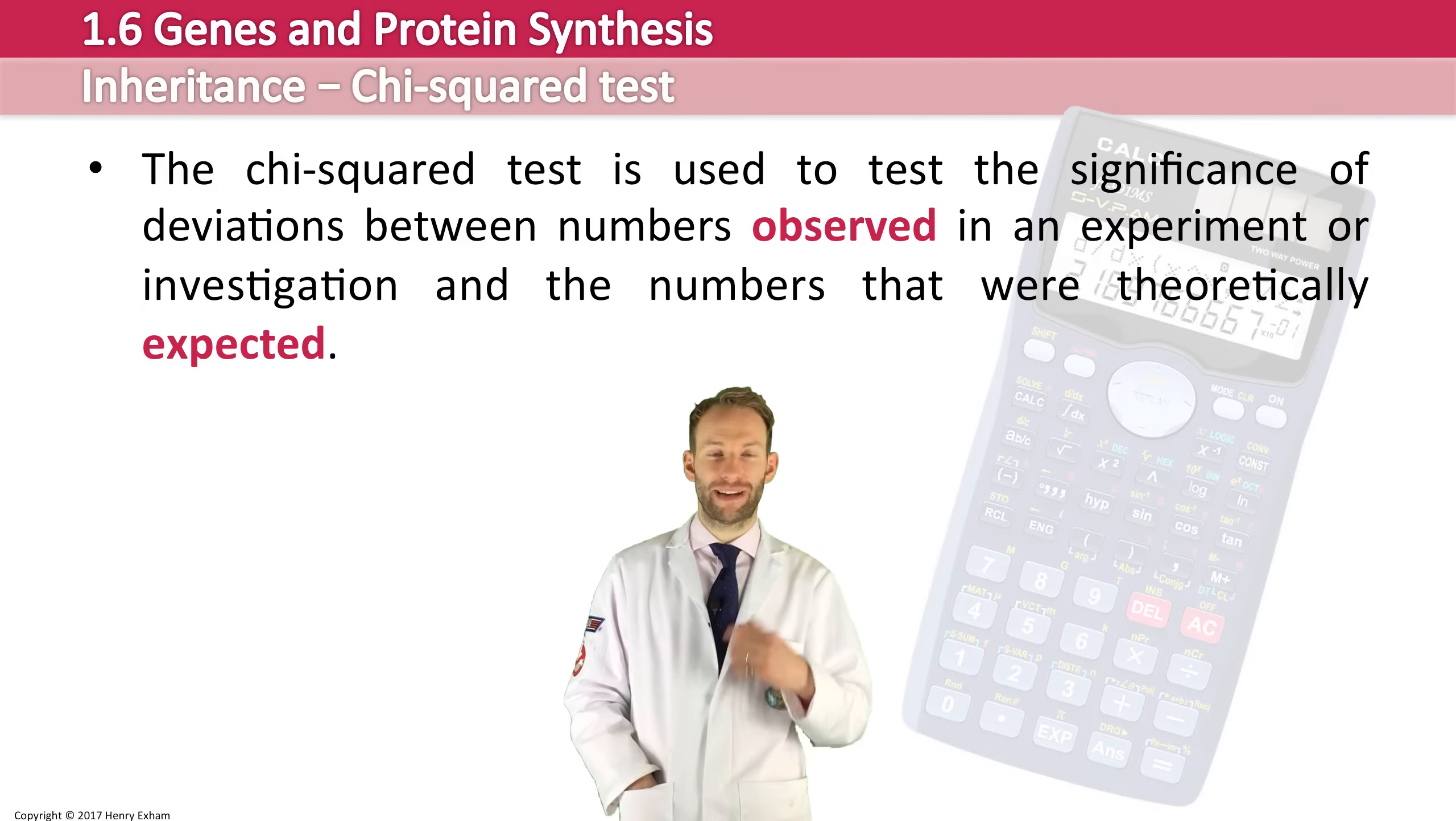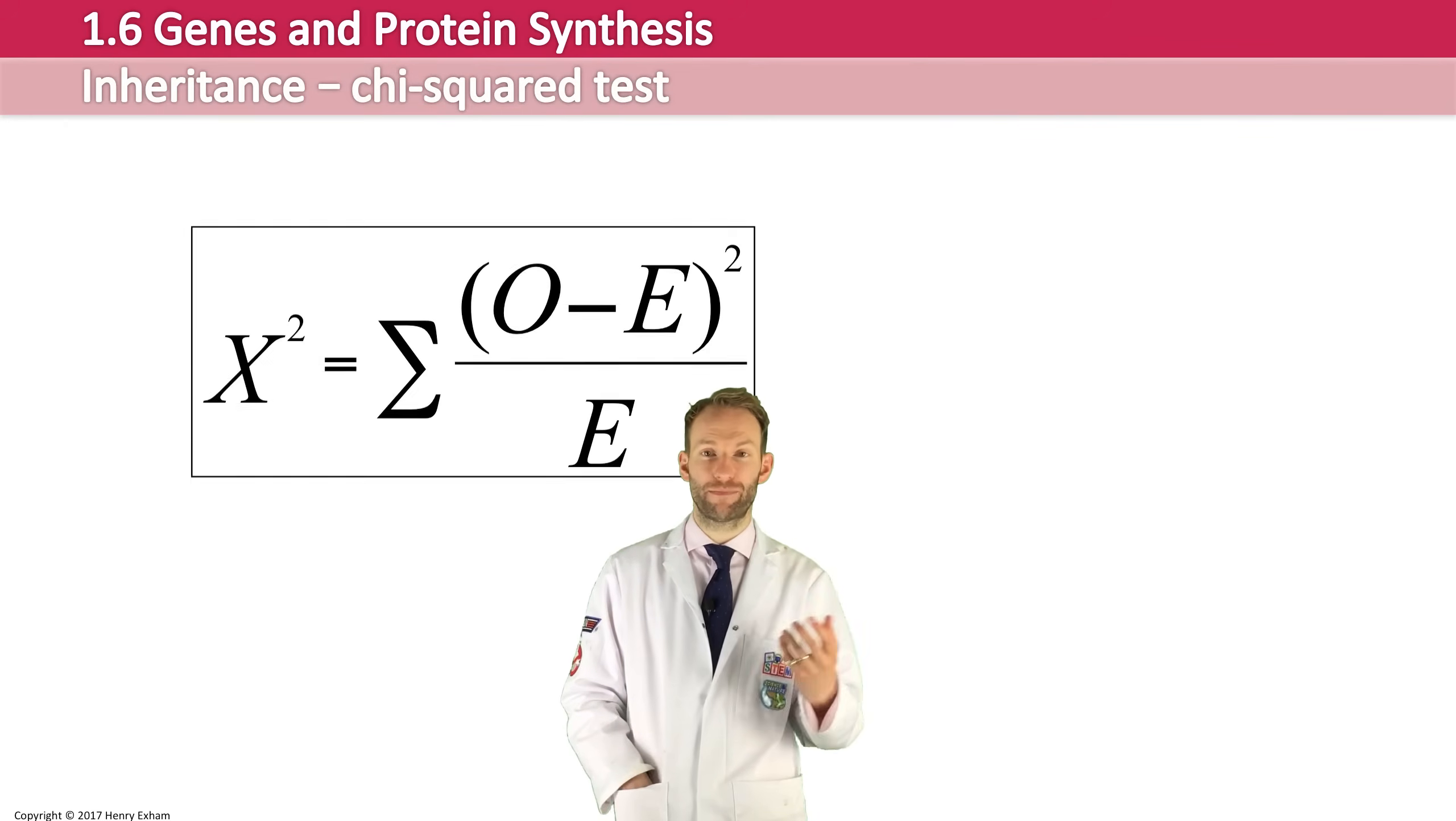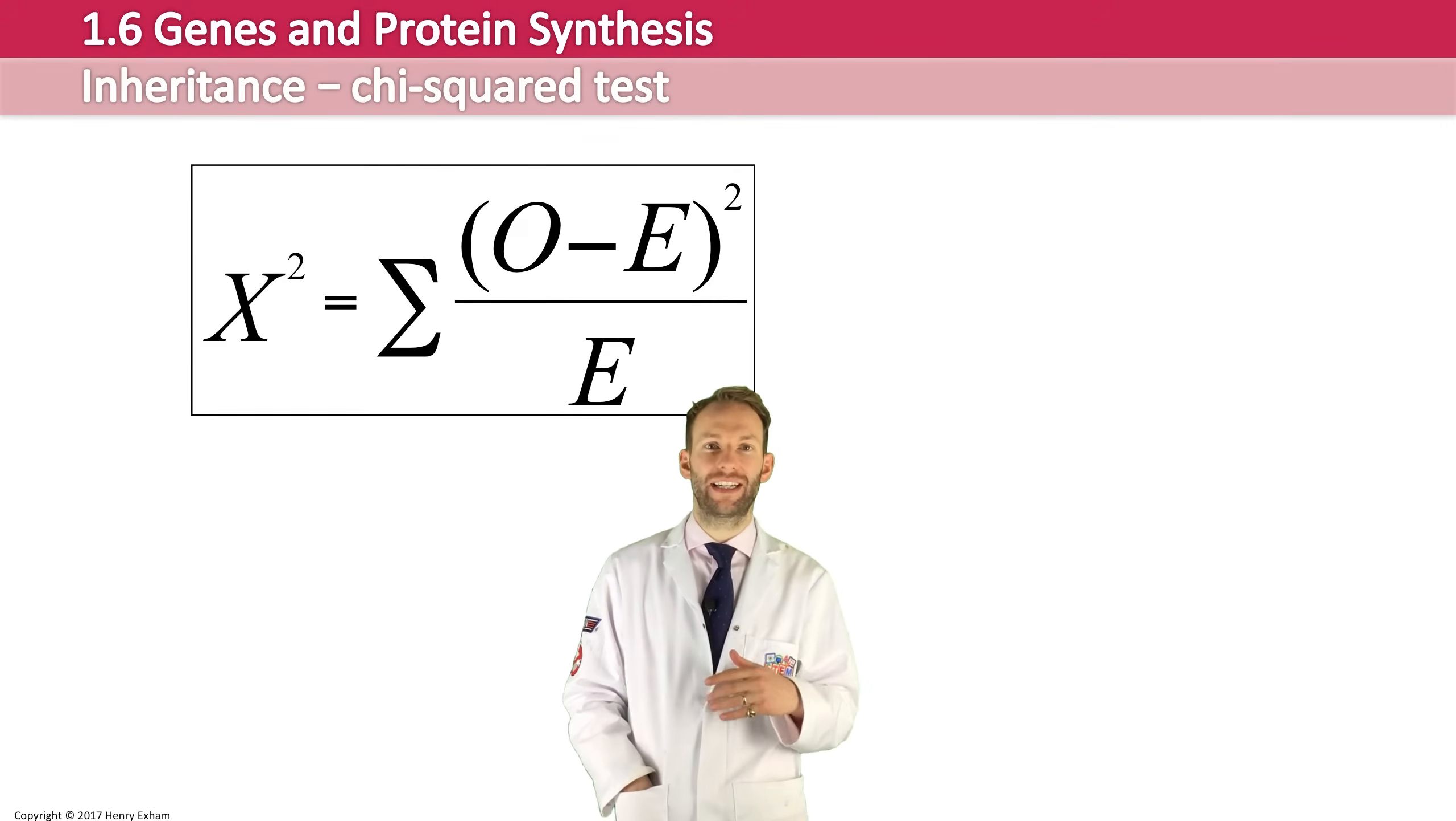This is the equation we're going to use. It may look a bit confusing, but it's actually quite simple when you work it out and lay it out in a particular table format that I'm going to show you. O is the observed result, E stands for expected results, and then you've got the sum of symbol there.